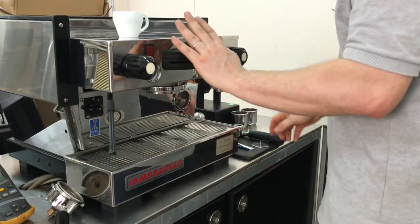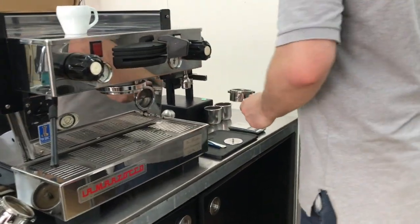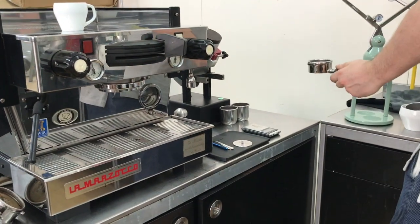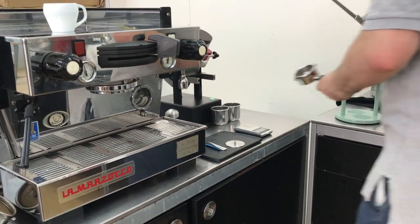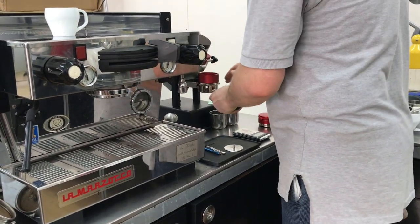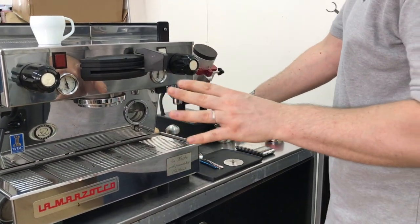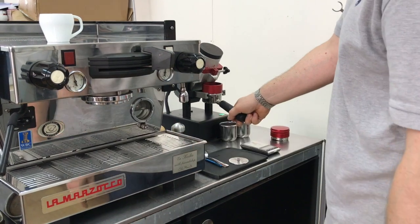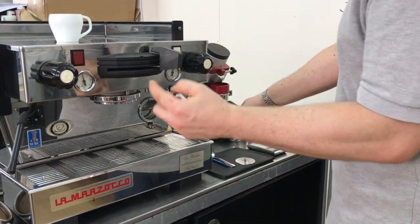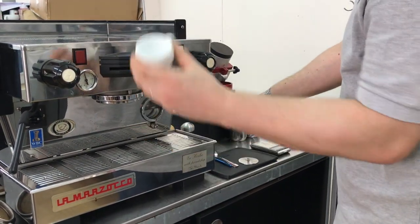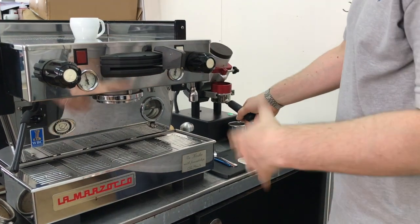Alright, so that one's set. I've got my beans ready. We're not going to worry too much about the shot quality, we're just going to measure the temperature in the cup. So this has been preheated as well on the machine just like you do.